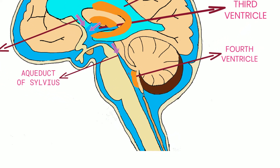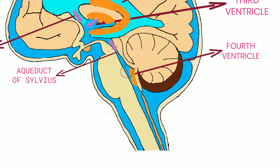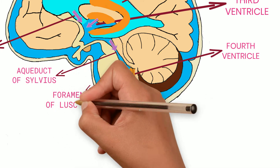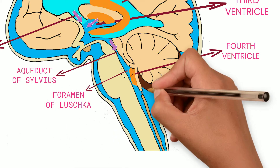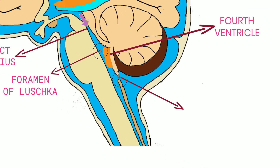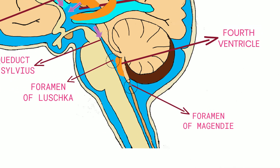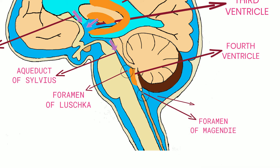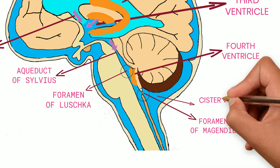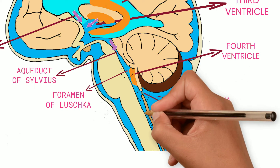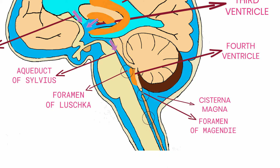From the fourth ventricle, CSF exits through three routes. First, through the foramen of Luschka — two lateral apertures — into the cerebellopontine cistern. Second, through the foramen of Magendie — a single aperture on the medial side — from which CSF flows into the cisterna magna. Third, a small amount enters the central canal of the spinal cord.